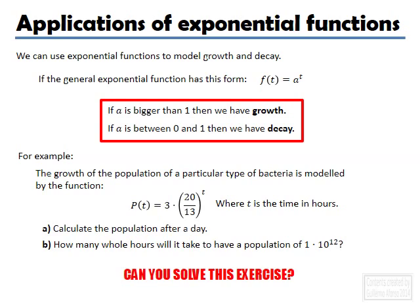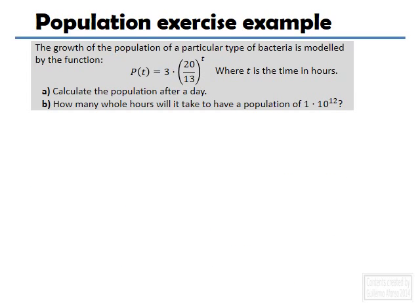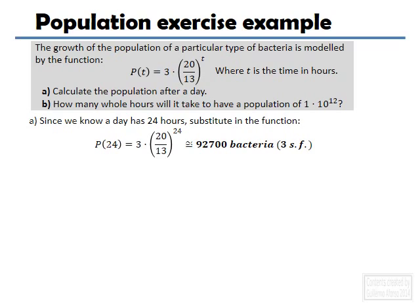Now, let's solve it. Here's the same exercise. So, let's start by doing part A. Now, we know that a day has 24 hours. So, what I have to do to figure out a population after 24 hours is simply put 24 here. And I'm going to solve the equation with my graphic display calculator. And I'm going to get 92,700 bacteria rounded to three significant figures.